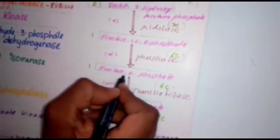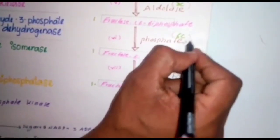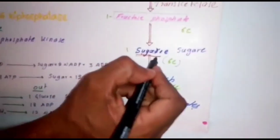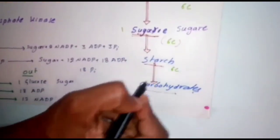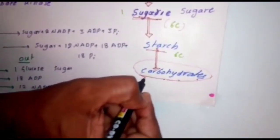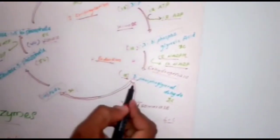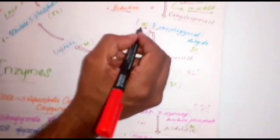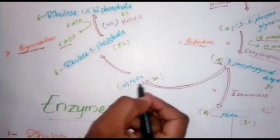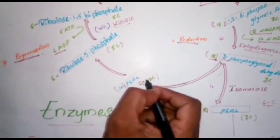Then 12 moles of 3-phosphoglyceraldehyde are going to form as a 6-carbon compound, that is fructose sugar. The fructose sugar is converted into fructose-6-phosphate, then fructose-6-phosphate is converted into sugar molecules, which then form starch as well as carbohydrates. Carbohydrates are the end product of this dark reaction. Out of 12 moles, 2 moles have been used for starch formation.